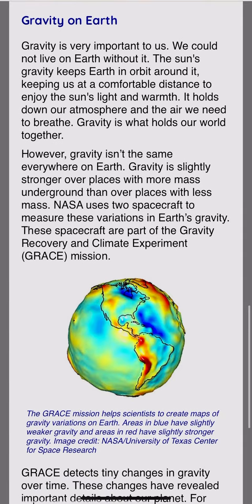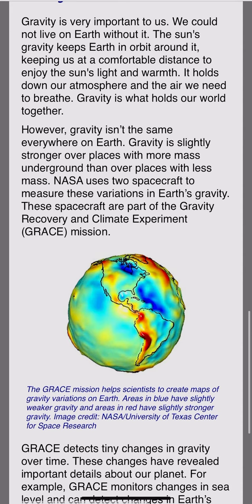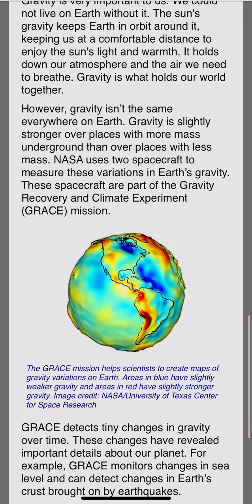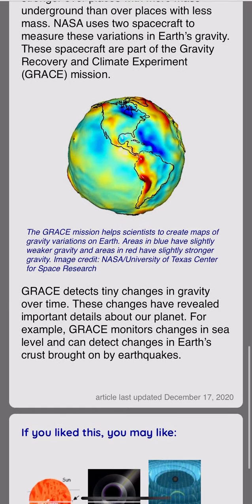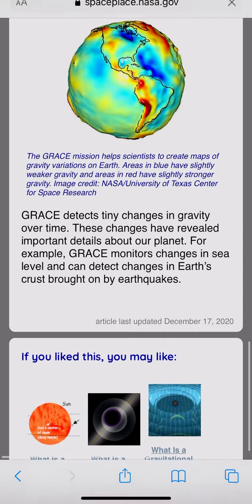However, gravity isn't the same everywhere on Earth. Gravity is slightly stronger over places with more mass underground and weaker over places with less mass. NASA uses two spacecraft to measure these variations in Earth's gravity. These spacecraft are part of the Gravity Recovery and Climate Experiment, or GRACE, mission. GRACE detects tiny changes in gravity over time.